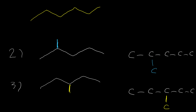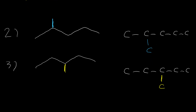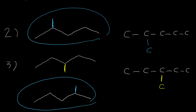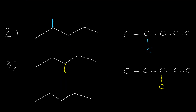Right now we have three isomers. We cannot put a branch on the fourth carbon from the left side, because that structure and the branch-on-second-carbon structure are the same — you can convert one to the other by flipping. The reason is that with five carbons the molecule is symmetric, so the second position from the left and second from the right are identical. Placing a group on either gives the same result.